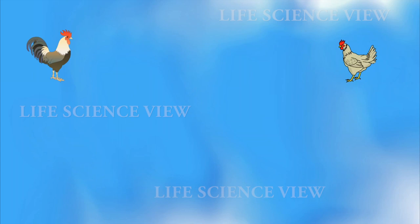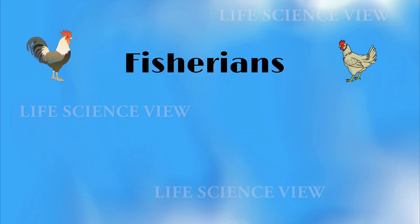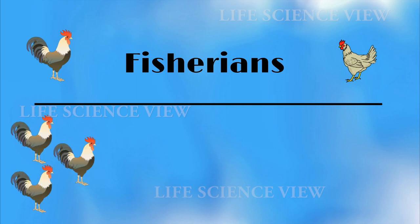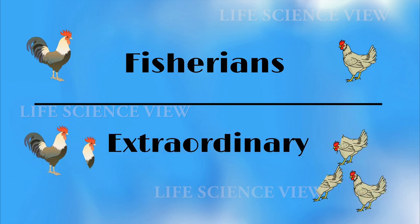According to Fisher's model, organisms that follow the sex ratio of one is to one were known as Fisherian, and those that don't follow one is to one were non-Fisherian or Extraordinary.